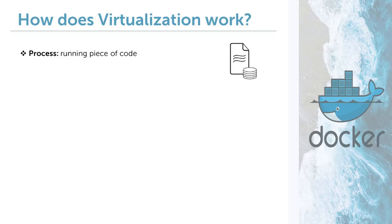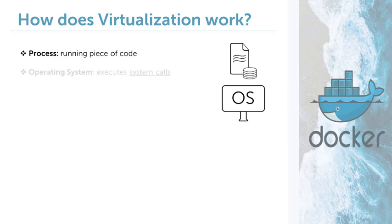From the point of view of the process, the operating system has one crucial obligation which it has to fulfill in order for a process to be able to do its thing, namely system calls. In case you don't know what system calls are, let's cover them quickly, again with an example.